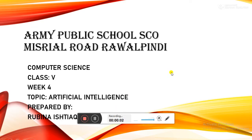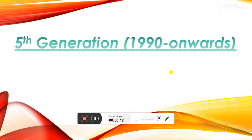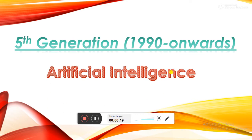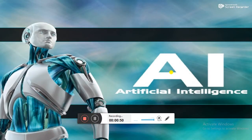Assalamu alaikum dear students, welcome to EPSAC's online support programs. Your fourth week assignment is Artificial Intelligence. I'm your computer teacher Ruby Najdia. The topic is fifth generation computers, starting from 1919 onward. In the 1990s, computers became even faster and presented the opportunity to develop artificial intelligence systems. Robotics was developed to build machines that can think or resemble humans, leading us to fifth generation computers and AI.